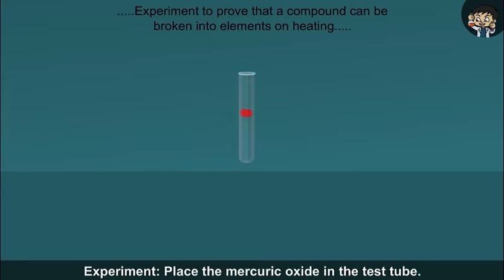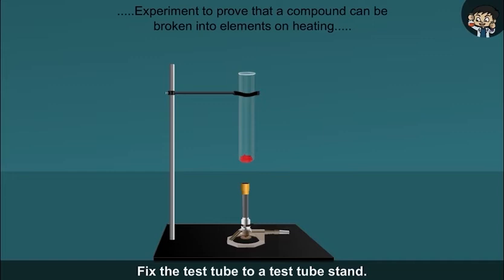Experiment: Place the mercuric oxide in the test tube. Fix the test tube to a test tube stand. Heat it on a Bunsen burner.